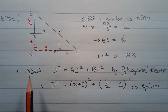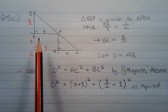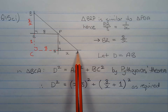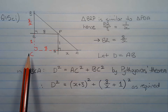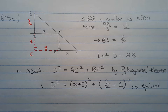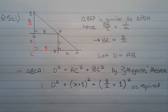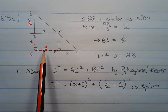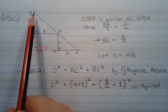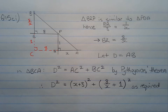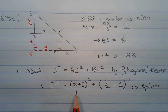Now in triangle BCA, we form this triangle by extending BR a little further and extending AQ a little further to the left so that they meet at point C, giving a large right angle triangle. Applying Pythagoras theorem: d squared equals AC squared plus BC squared. AC is the sum of x and 8, so that's (x+8) all squared. BC is the sum of 8 over x and 1, so that's (8/x + 1) all squared. Therefore d squared equals (x+8)² + (8/x+1)² as required.